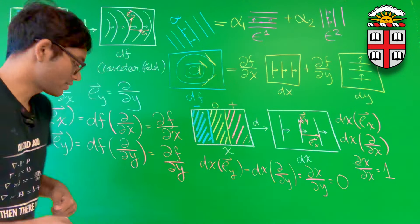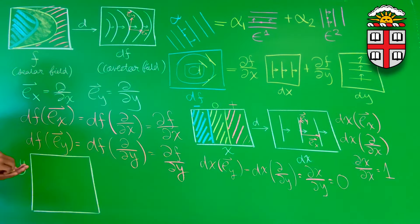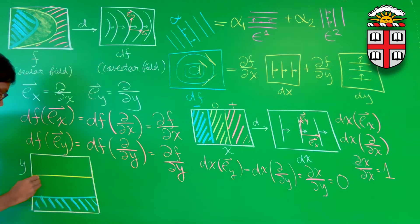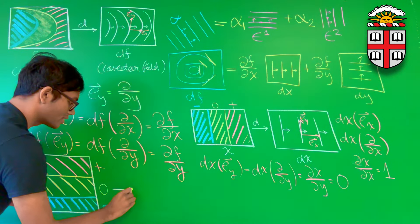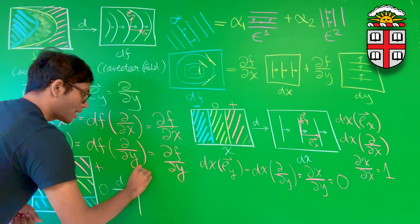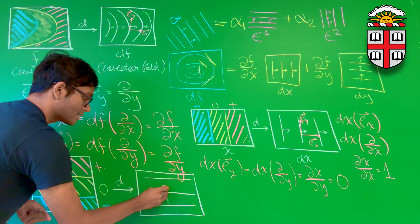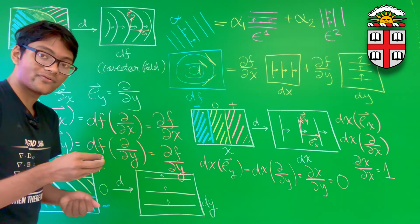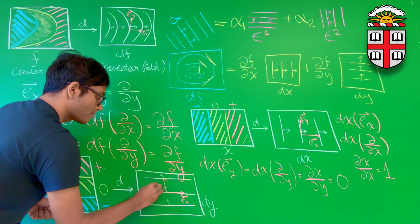Let's do the same thing for the y basis vector. We start with the scalar field for y: negative values at the bottom, values close to zero in the middle, and positive values at the top. After applying the differential operator d, the co-vector field for y looks like horizontal contour lines that increase going upward. This is the differential co-vector field for dy. Let me draw in the vector bases: e_x and e_y on the dy co-vector field.